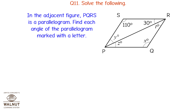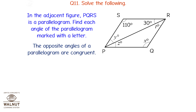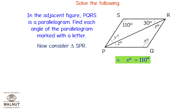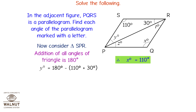In the adjacent figure, PQRS is a parallelogram. Find each angle marked with a letter. Since opposite angles are congruent, angle Q equals angle S equals 110 degrees, so X equals 110 degrees. In triangle SPR, the angles sum to 180 degrees, so Y equals 180 minus 110 plus 30, giving Y equals 180 minus 140, so Y equals 40 degrees.